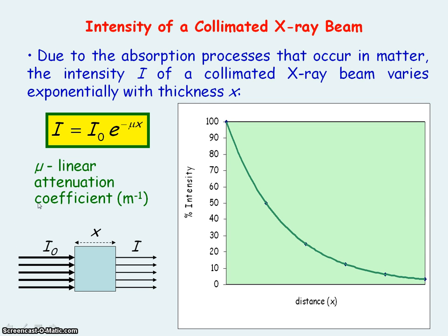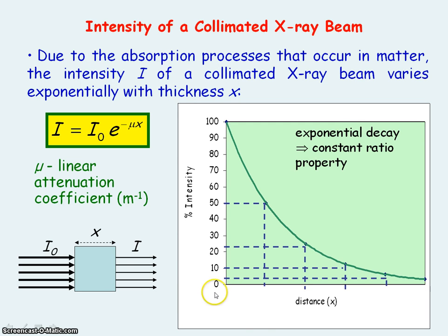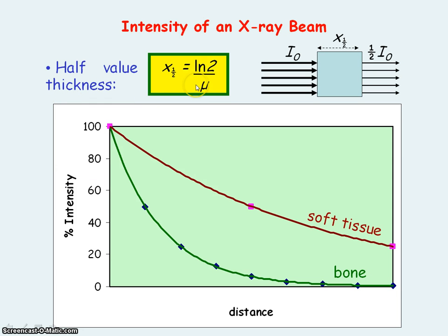Mu gives an indicator of how much X-rays are absorbed in matter — the larger the value, the greater the absorption. Because the intensity varies exponentially with thickness x, the constant ratio property applies: for equal increases in thickness x, the intensity falls by the same ratio. The half value thickness, which equals the natural log of 2 divided by the linear attenuation coefficient, represents the thickness of medium required to reduce the intensity of the X-ray beam to half.